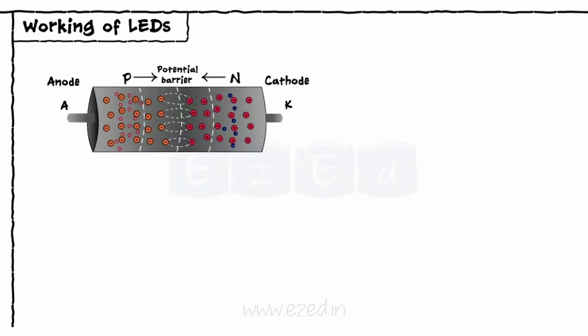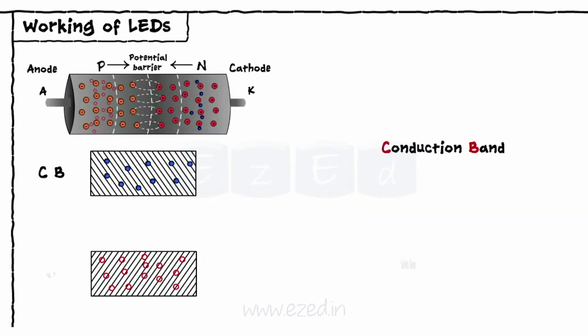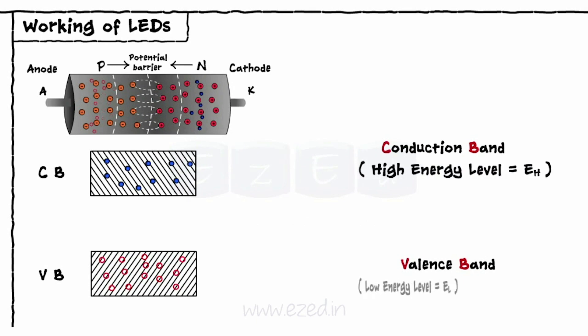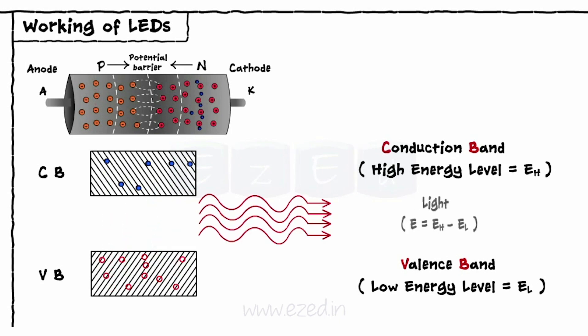These electrons are in the conduction band and holes are in the valence band. As the energies of the conduction band and valence band are different, when electron-hole recombination takes place, the energy equal to the difference between the two energies is radiated in the form of light.